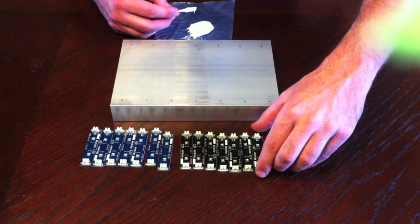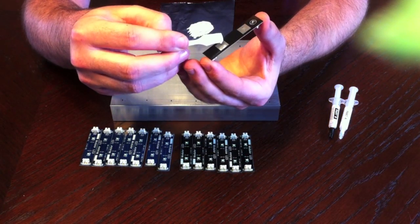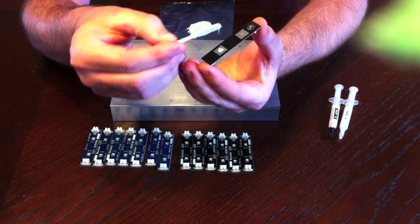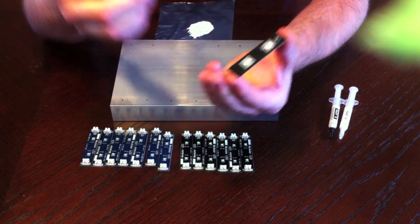Now I get my heat sink and as I said before, just apply a little piece of glue to the center of each of these thermal pads. It doesn't need too much, just like so.